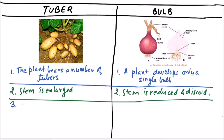A tuber is devoid of roots — there are no roots. But in the case of a bulb, we can observe adventitious roots coming out from the base. So a bulb bears roots at its base.